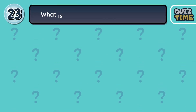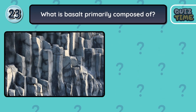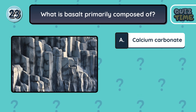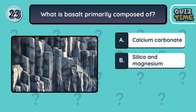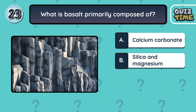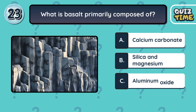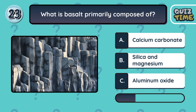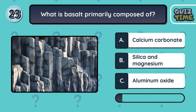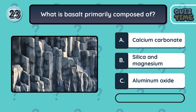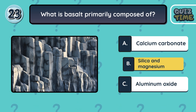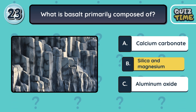Number 23. What is basalt primarily composed of? A. Calcium carbonate. B. Silica and magnesium. C. Aluminum oxide. The correct answer is B. Silica and magnesium.